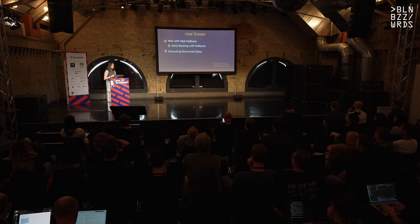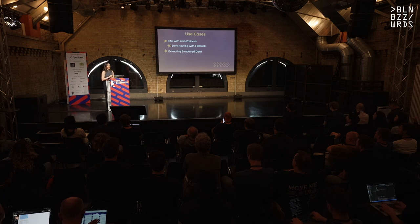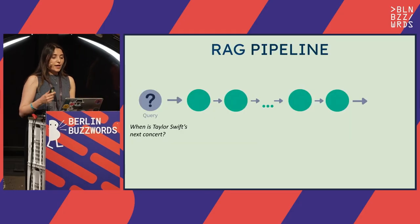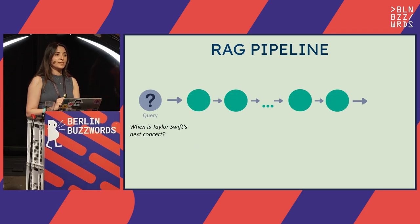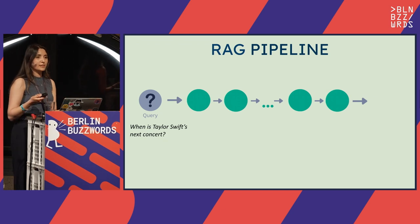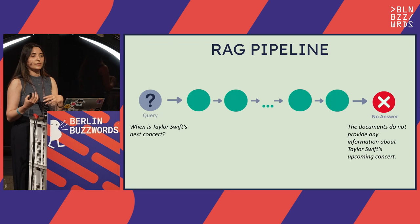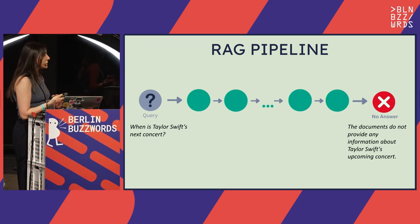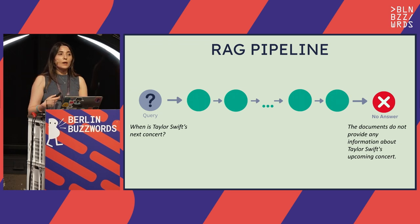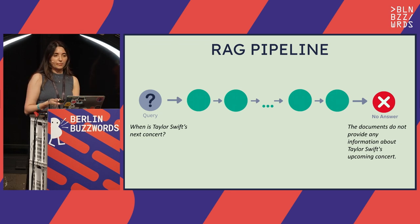The first use case is RAG with a web fallback. Then we'll change the example slightly and make an early routing pipeline with fallback. And last, we'll see extracting structured data and what can go wrong there. So I have this RAG pipeline — it's great, it's working fine. But what if the user asks about information that is not found in my document store? Best case scenario, your large language model will return an answer saying it couldn't find relevant information. But this means I have no answer, and for some cases this might not be something I'd like to show to my users.